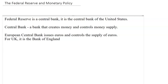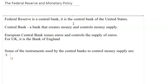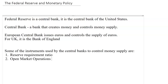There are different instruments that the Federal Reserve or any central bank uses to control money supply. One is the reserve requirement ratio — this tells banks how much they must keep in their vaults as cash and how much they can give out as loans. Another is open market operations, which is the purchase and sale of government bonds or securities.